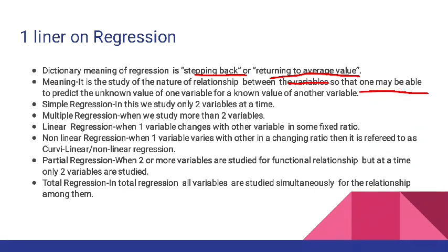Ab regression ke types par aa jaate hain. Simple regression kya hota hai — jab hum sirf 2 variables ke baare mein padhte hain, use hum simple regression bolte hain. Ek hota hai multiple regression — multiple ke andar more than two variables ki study ki jaati hai. Linear regression hota hai jab one variable changes with other variable in some fixed ratio — matlab jab do variables x aur y hain aur dono ke change hone ki ratio ek jaisi fix hai, to woh ho jaayega linear regression. Non-linear regression — if one variable varies with other in a changing ratio. Yahan par ratio change ho rahi hai x aur y ke beech mein, to is tarah ke regression ko curvilinear ya non-linear regression bhi bola ja sakta hai.